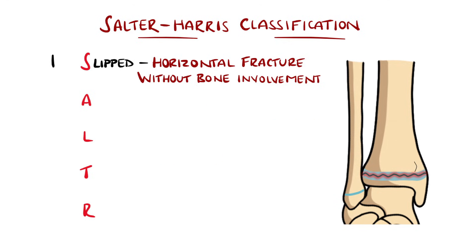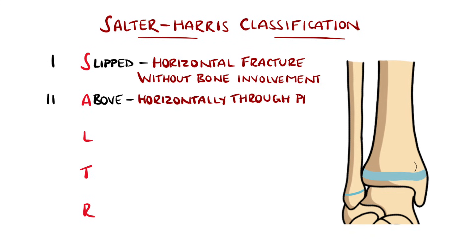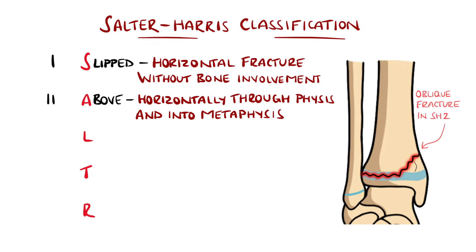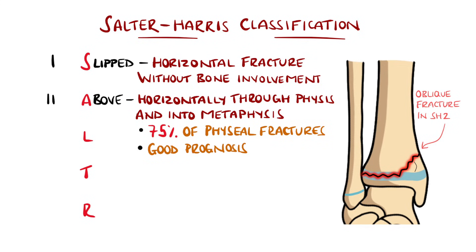A is for above, meaning the fracture passes horizontally through the growth plate and then involves the metaphysis. This is usually a vertical or oblique fracture. Approximately 75% of physeal fractures are type 2, and they also have a favourable prognosis.